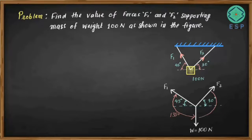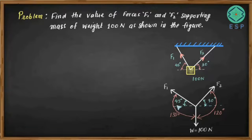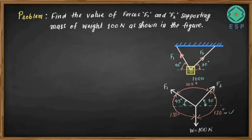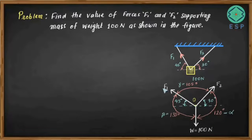The angle between F1 and F2 is 45 + 30 = 75 degrees, so the angle opposite to W is 180 − 75 = 105 degrees. So angle alpha (opposite to F1) = 120°, angle beta (opposite to F2) = 135°, and angle gamma (opposite to W) = 105°. Calling the junction point O, all three forces are in tensile condition acting away from O, so we can apply Lamy's theorem.